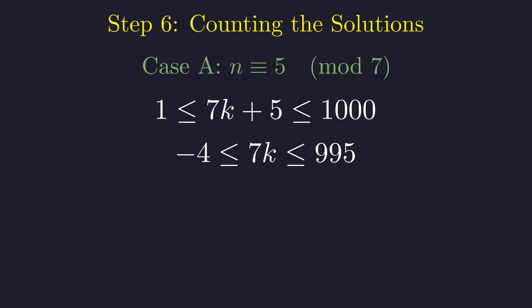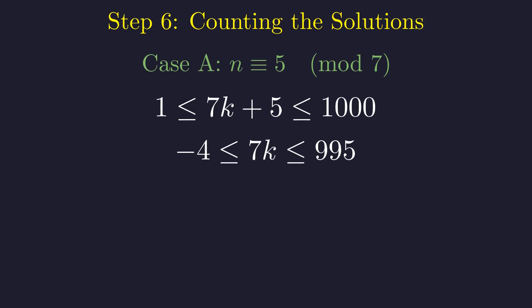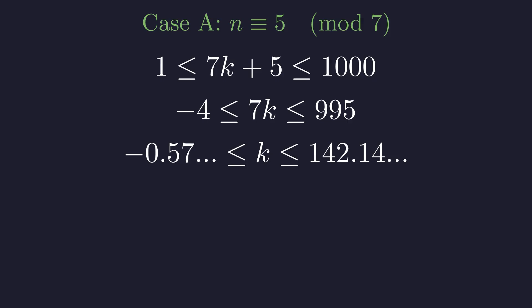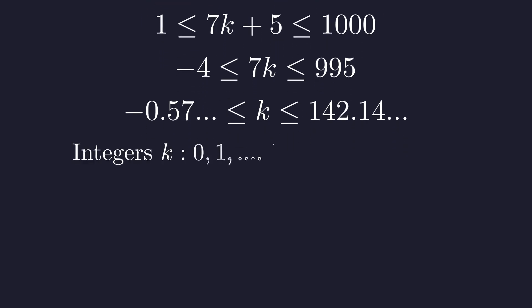Subtracting 5 from all parts gives this range. Dividing by 7, we find the bounds for the integer k. The possible integer values for k range from 0 to 142. This gives a total of 143 solutions for this case.